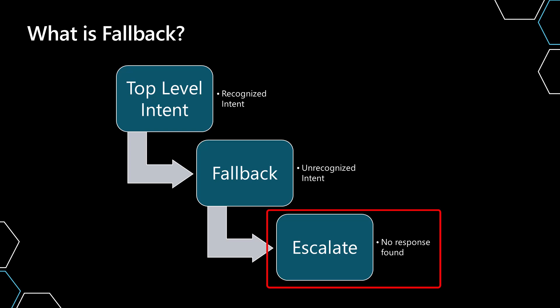Churn is the concept of someone asking the same or different questions and constantly being routed to 'I don't know.' When that happens, you determine how many times you want to hit 'I don't know' before going through an escalation process — which may mean opening a ticket or handing off to a live agent. These are the basic concepts of fallback and churn detection.